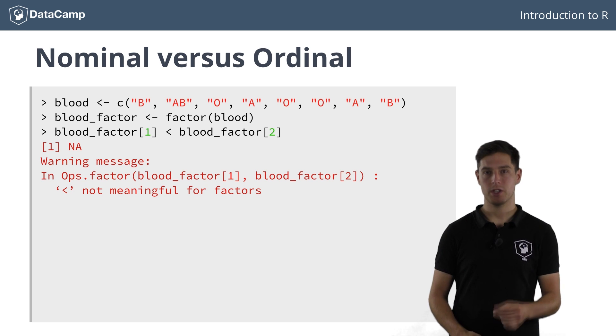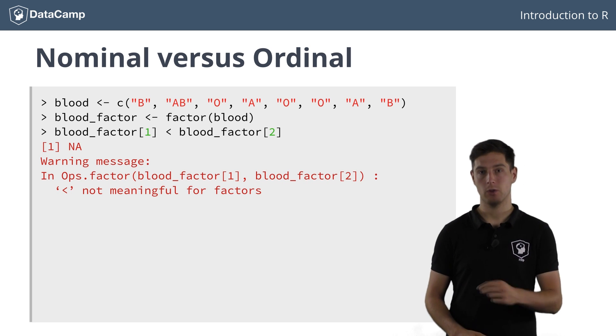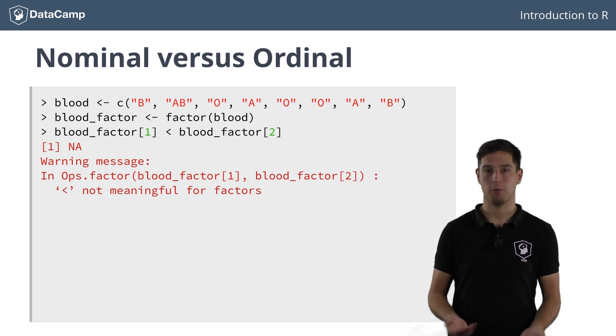However, there are examples for which such a natural ordering does exist. Consider, for example, this t-shirt factor. It has codes ranging from small to large. Here you could say that a large indeed is greater than a small, for example, right? Of course, R provides a way to impose this kind of order on a factor, thus making it an ordered factor.